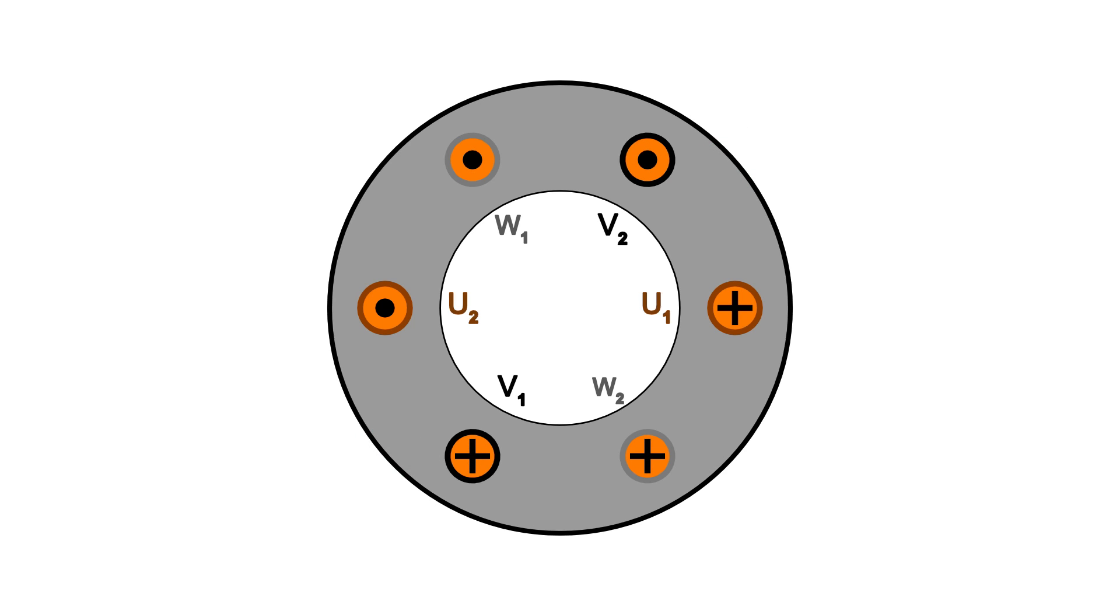Now when current flows through a conductor it generates a magnetic field around it. If current is flowing away from you the magnetic field has a clockwise direction and if it's flowing towards you the field has an anti-clockwise direction. So we can show all the fields around the conductors and it will look a bit like this.